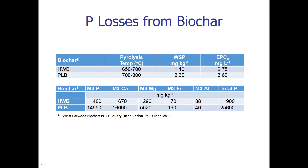Now let us look at P losses from biochar. Biochar is also a P source. The water-soluble P values for the two biochars — hardwood biochar and poultry litter biochar — are different. Poultry litter biochar has greater solubility than hardwood biochar, and the same is true for total P and Mehlich-3 P. Therefore, just like any other P source, biochar P sources should also be taken into consideration when land applied.